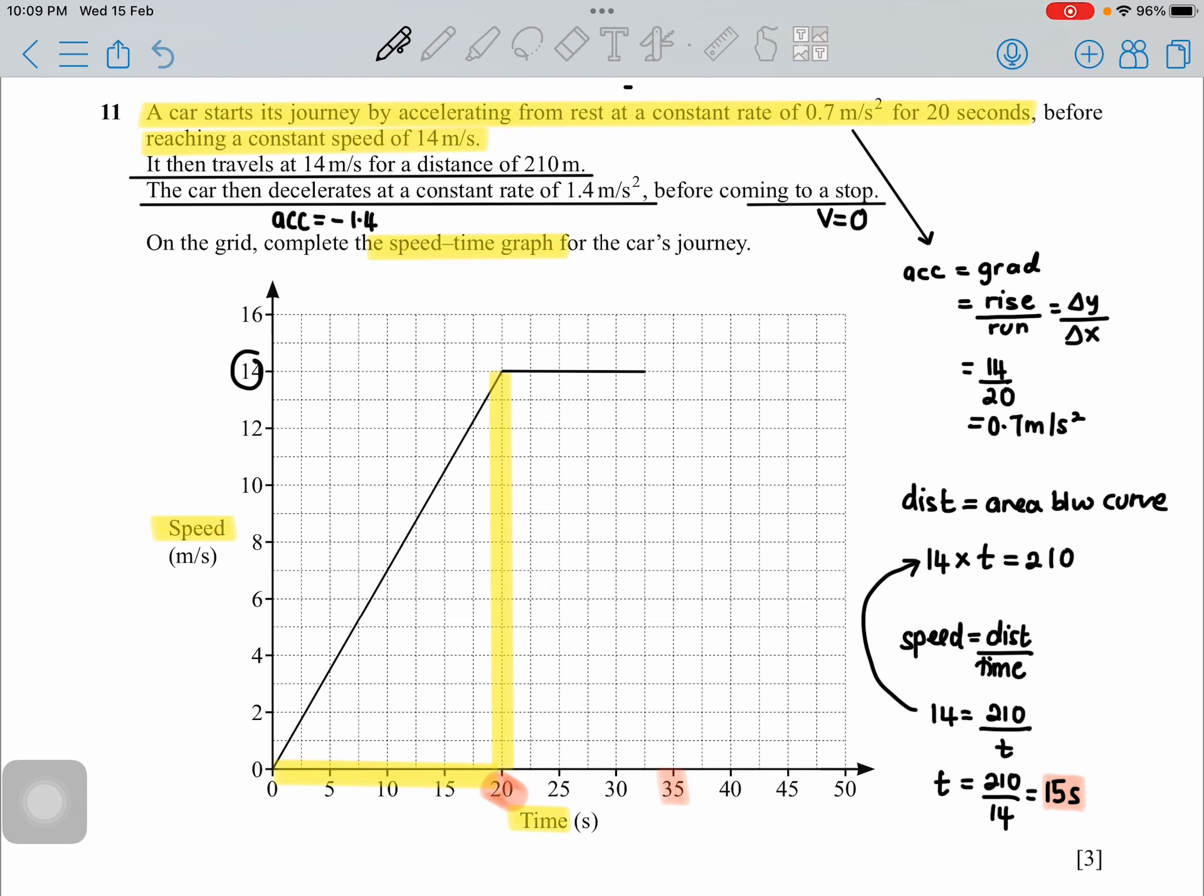So 1.4 is my gradient value. I need to find the rise over run. How much is your rise? It's still 14—the change in the y is still 14. Your run is the measure of the time which you are not so sure yet. So your t is exactly 14 divided by 1.4, which is 10.